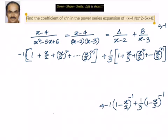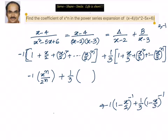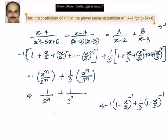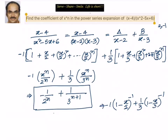We are interested in the coefficient of x power n, so we write only the x power n term. That is minus 1 into x power n by 2 power n, plus 1 by 3 into x power n divided by 3 power n. We want only the coefficient, that is minus 1 by 2 power n plus 1 by 3 into 1 by 3 power n, which equals 1 by 3 power n plus 1. So the coefficient of x power n in the power series expansion of x minus 4 divided by x squared minus 5x plus 6 is minus 1 by 2 power n plus 1 by 3 power n plus 1.